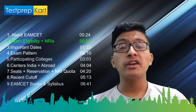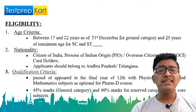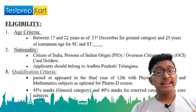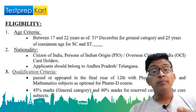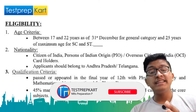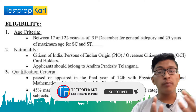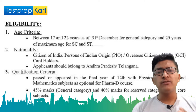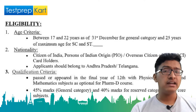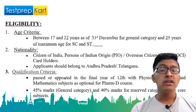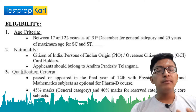The basic exam eligibility for EAMCET is that you should be of Indian origin — you can be an NRI student but your origin should be India. Second, you should have completed 16 years of age at the time of filling the application form. Third, you should have scored a minimum of 45% aggregate in class 12th board examination, and for reserved category students it is 40%. If you are appearing in class 12th this year, you can also fill the form, but this is the basic requirement for admission into colleges.